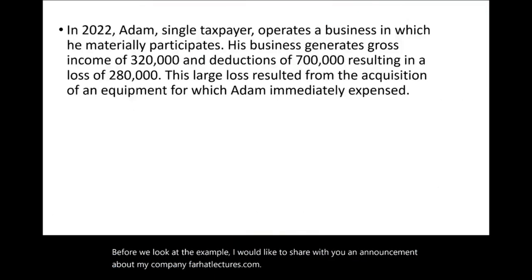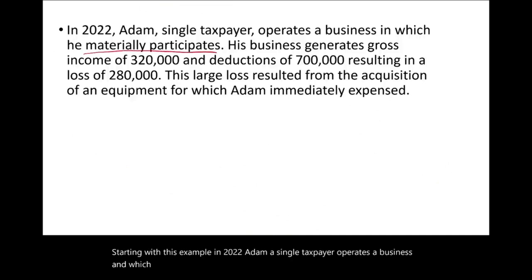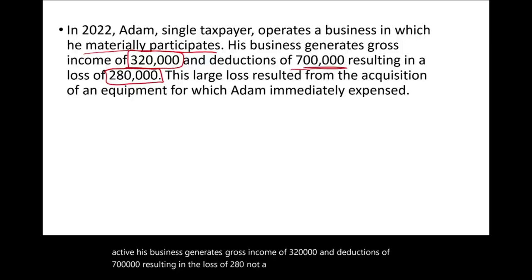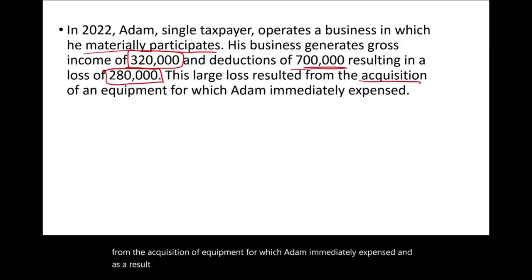Starting with this example: in 2022, Adam, a single taxpayer, operates a business in which he materially participates. Adam is running the business — Adam is active. His business generates gross income of $320,000 and deductions of $700,000, resulting in a loss of $280,000. This large loss resulted from the acquisition of equipment for which Adam immediately expensed, resulting in a large loss.